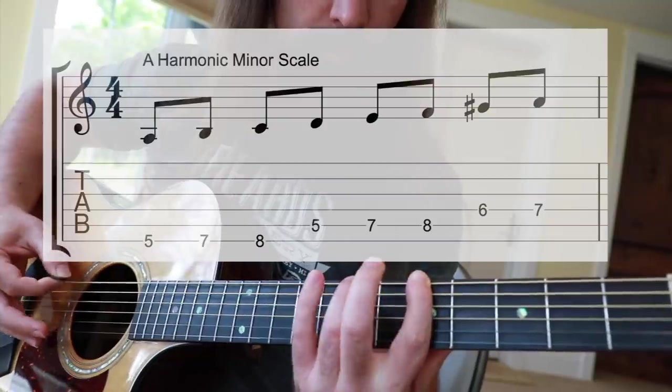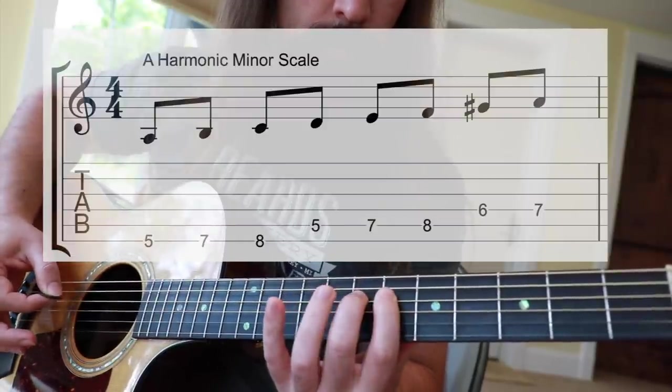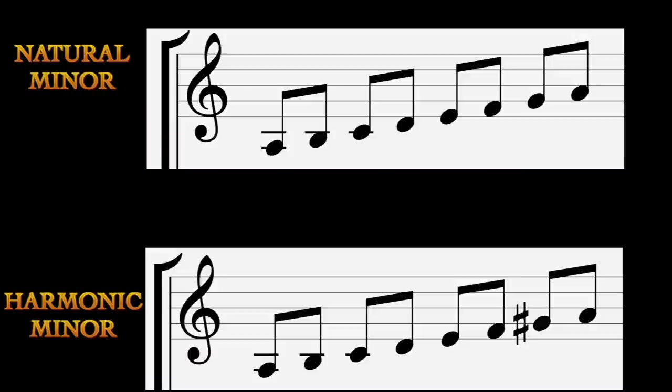The foundation of the classical sound is rooted in the harmonic minor scale. The raised seventh degree creates a major five chord as opposed to a minor five chord. The major five chord creates a stronger resolution back to the one. Can you hear it?